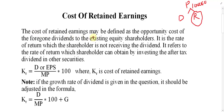The cost of retained earning may be defined as the opportunity cost of foregoing dividend to the existing equity shareholders. Why are you not paying me dividend? Why are you maintaining it in the business? If you pay me, I will invest somewhere. But if you do not pay, you have to give me some return. It is the rate of return which the shareholder can obtain by investing their after-tax dividend in other securities.